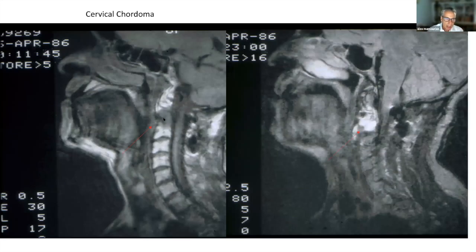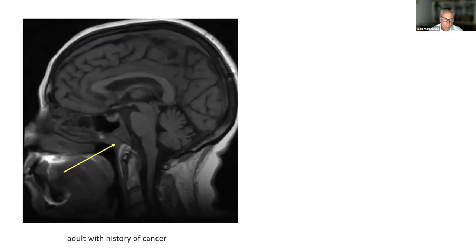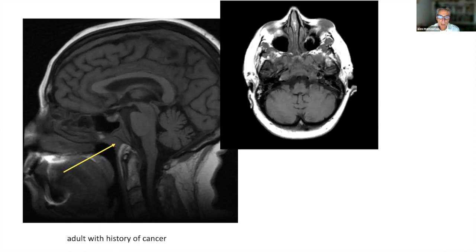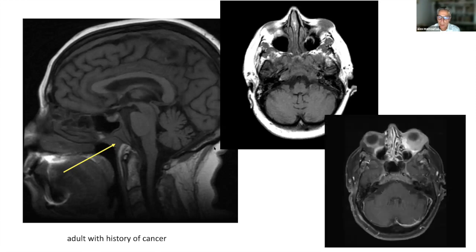Chordomas can also occur in the spine — this one is in the cervical spine, again with long T2 time and high signal intensity on the T2-weighted scan. This is a different entity: here we have loss of bone marrow in the clivus with some soft tissue present. Whenever you see this pattern of involvement in the clivus, with or without bony destructive change, you want to consider metastatic disease. This turned out to be a clival metastasis, although it could also represent extension from a nasopharyngeal cancer in the appropriate clinical circumstance.